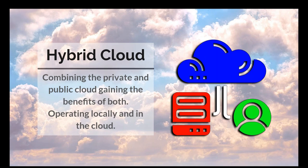Hybrid cloud combines public cloud and private or local cloud together, giving you the benefits of both. For example, instead of having people VPN into your local network, they can access data through the cloud. You're able to replicate data in multiple locations, or use the cloud to back up your local data off-site. Some big cloud providers also sell hybrid cloud as a combined on-site and in-cloud managed service.